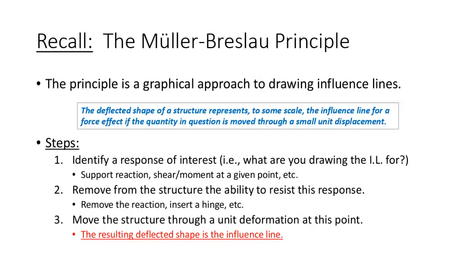I want to read the Miller-Breslau principle in detail because how it affects fixed supports is really important. The statement is: the deflected shape of a structure represents the influence line for a given effect if that effect is moved through a displacement. So you identify a response, remove from the structure the ability to resist that response, and then move the structure through a deformation.